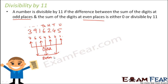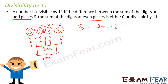What we need to do is find out the sum of the digits at odd places. So which are the odd places? Positions 1, 3, 5 and 7. So the digits at the odd places are 3, 1, 2, and 5. Sum of the digits at the odd places will be equal to 3 plus 1 plus 2 plus 5. Similarly, sum of the digits at the even places would be 9, 6 and 4, so 9 plus 6 plus 4.